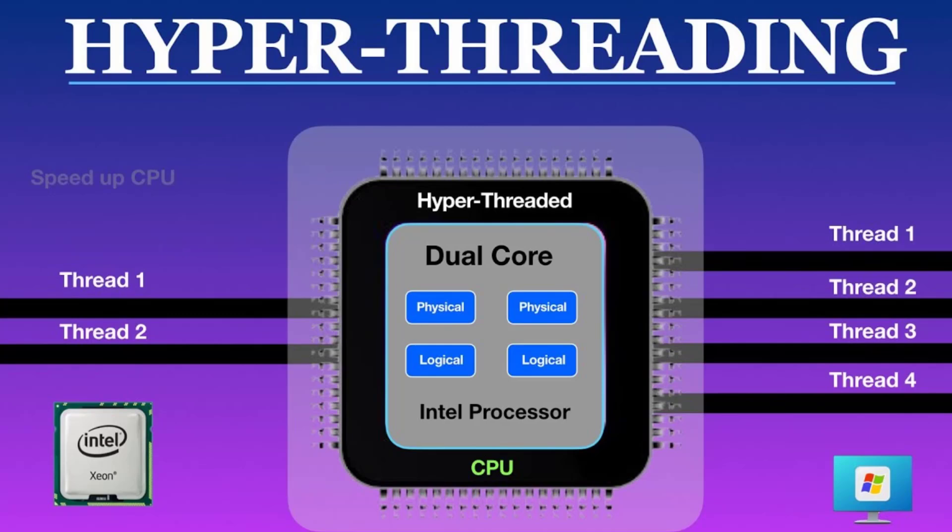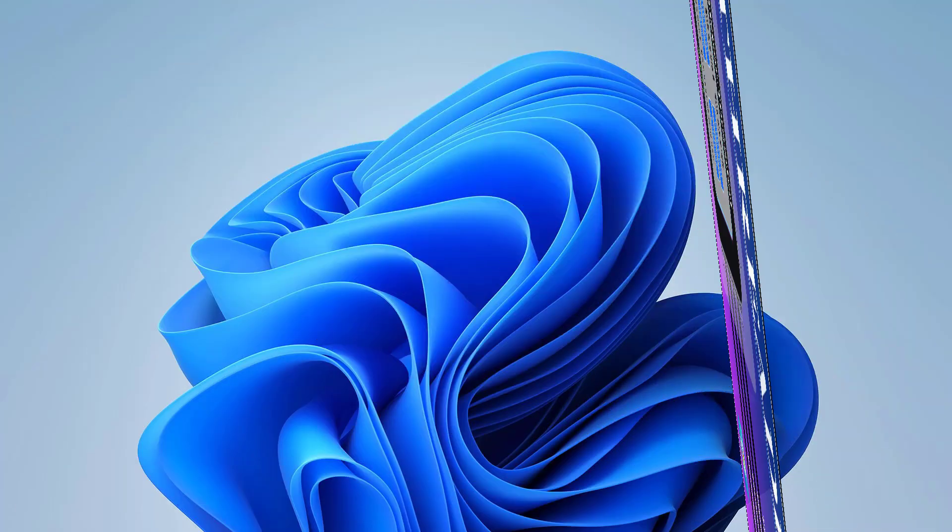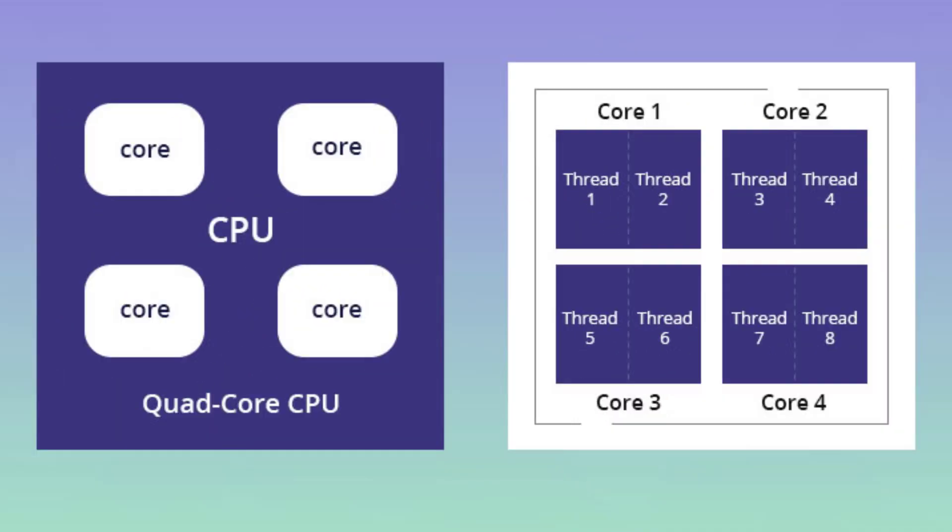There is also a concept of hyper-threading and multi-threading — they are similar but slightly different concepts. Hyper-threading is a technology exclusive to Intel CPUs which tricks the operating system into believing there are multiple separate CPUs present. For example, a dual-core CPU with hyper-threading will be seen by the operating system as four logical CPUs, and a quad-core CPU with hyper-threading will be seen as eight logical CPUs.